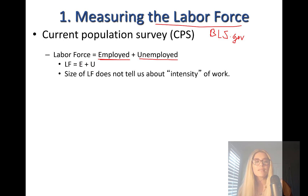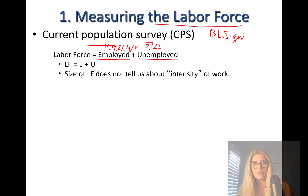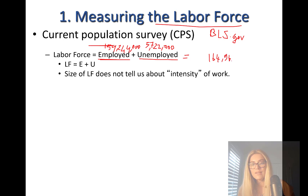Labor force equals employed plus unemployed. If you look at the United States right now, we have 159,244 million employed people, and the number of unemployed is 5.722 million people. So total labor force is 164,966,000 people. These are reported under the employment situation — I grabbed the December 2022 numbers.